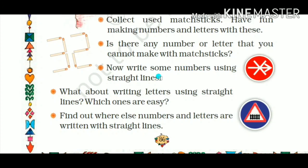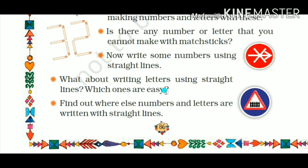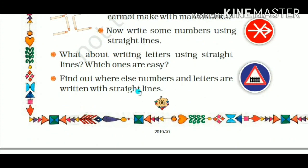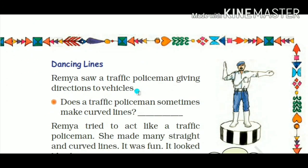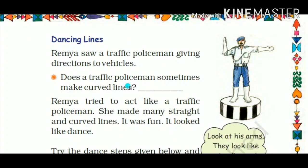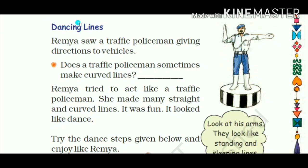Write some more numbers using straight lines — one, two, three, four, five. Now what about writing letters using straight lines? Letters like A, E, F are easy to write with straight lines. But letters like B and C, which have a curve, are harder. Find out where else numbers and letters are written with straight lines — you can check in your alphabet book.